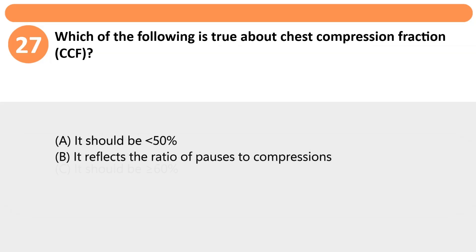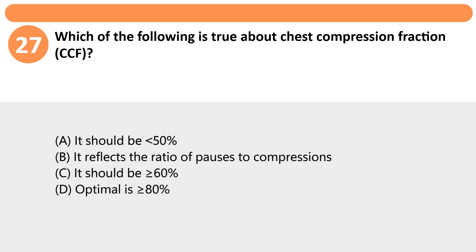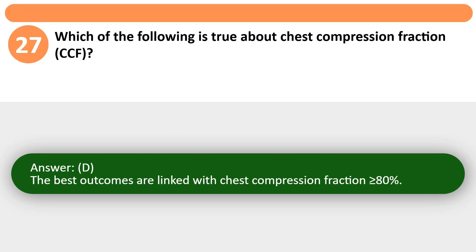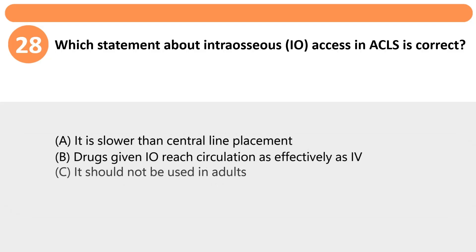Which of the following is true about chest compression fraction (CCF)? A. It should be less than 50%. B. It reflects the ratio of pauses to compressions. C. It should be greater than or equal to 60%. D. Optimal is greater than or equal to 80%. Answer: D. The best outcomes are linked with chest compression fraction greater than or equal to 80%.